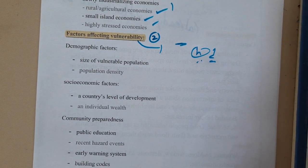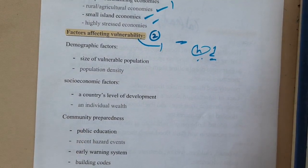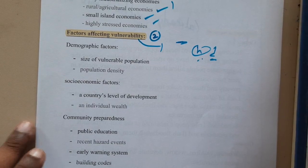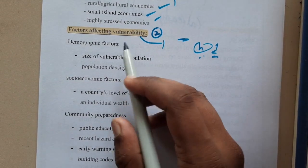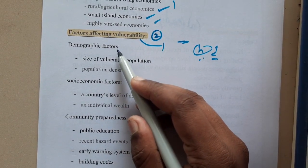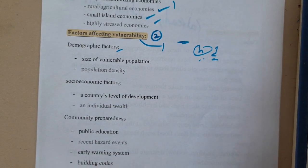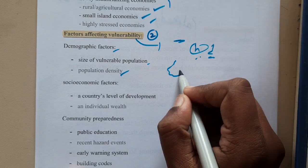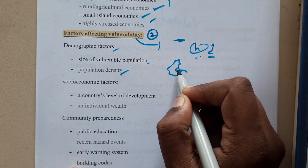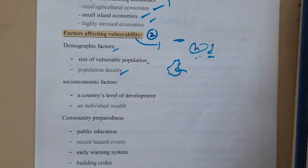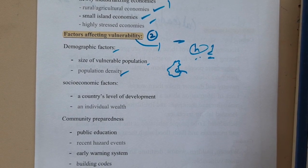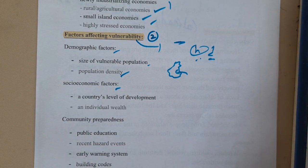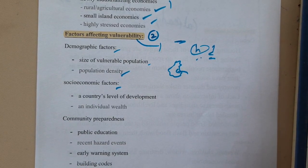In around the third or fourth video of the first unit we discussed that. Now let us go through some factors of vulnerability. The first are demographical factors — that is the size of the vulnerable population and population density. If a disaster strikes a highly dense city or country, there is a high chance of deaths. Similarly, socio-economic factors include the development status of the country and individual wealth.